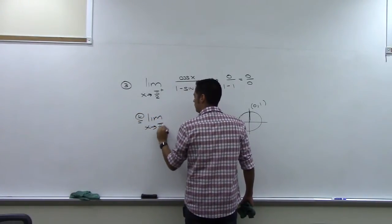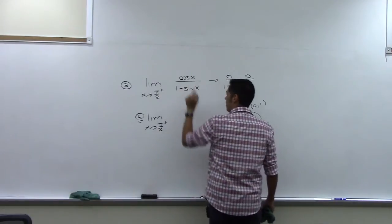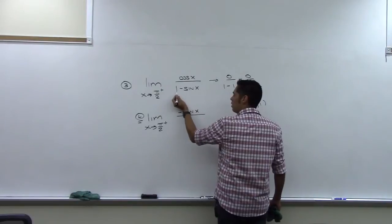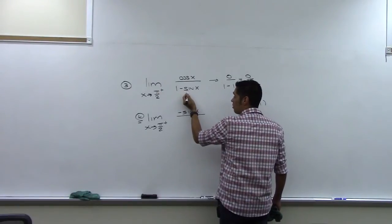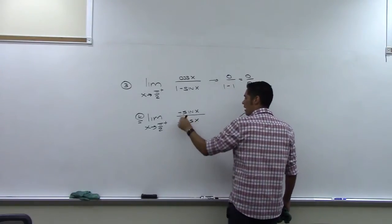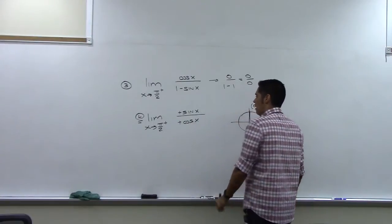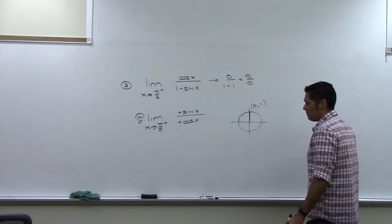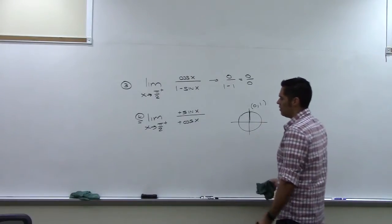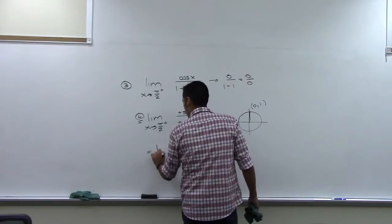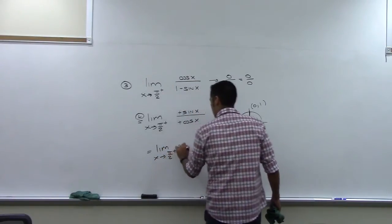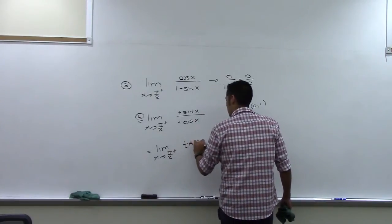Applying L'Hopital's Rule: the derivative of the top is negative sine x, and the derivative of the bottom — derivative of 1 is 0, derivative of negative sine x gives negative cosine x. The negatives cancel to give positive, so we have sine x over cosine x. We can rewrite that as tangent x, which will be a little easier to work with.